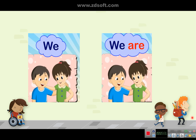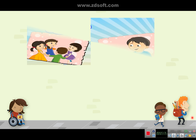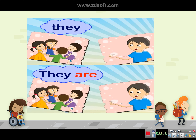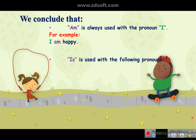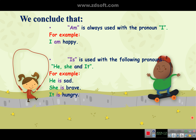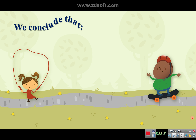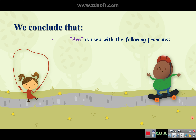We — we are. They — they are. We conclude that 'am' is always used with the pronoun I. For example: I am happy. 'Is' is used with the following pronouns: he, she, and it. For example: he is sad, she is brave, it is hungry. We conclude also that 'are' is used with the following pronouns: we, you, and they.